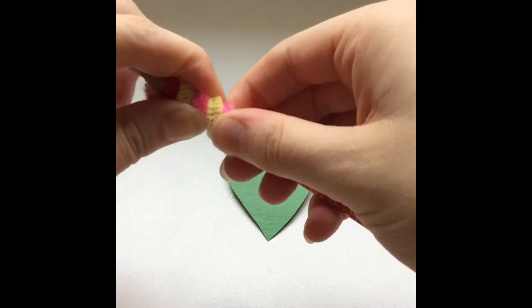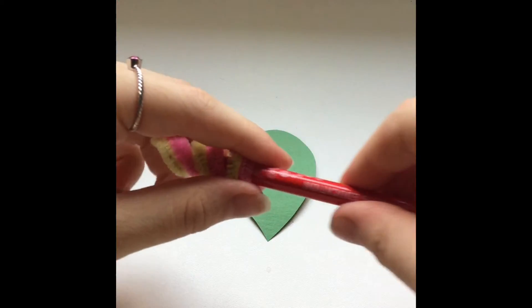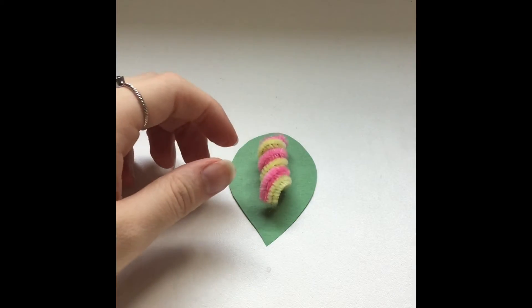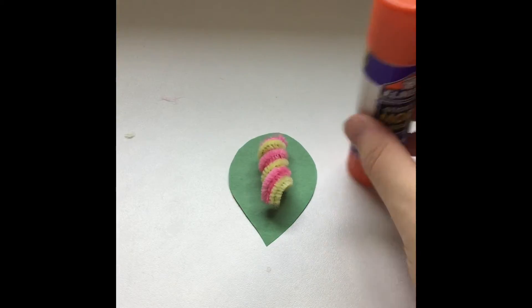Once you finish that, you just slide them off and glue. Take your glue stick and glue the little caterpillar to the leaf.